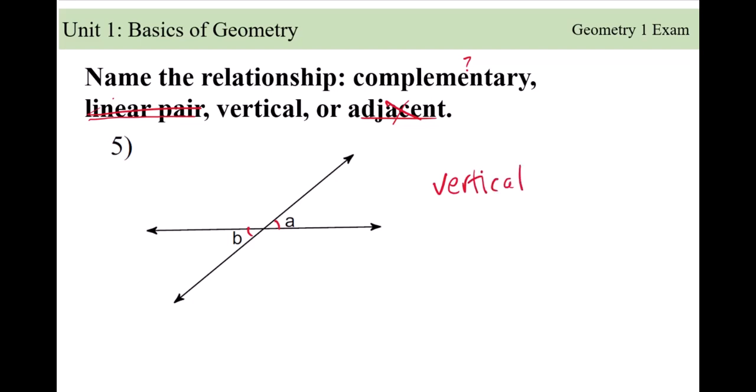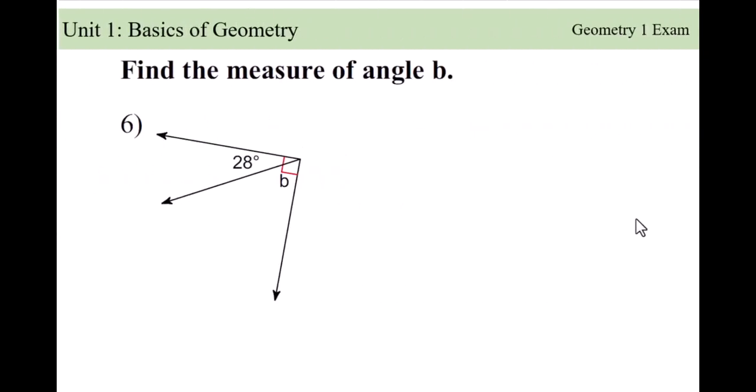Whenever you see an X shape or a bow-tie situation, those are vertical angles. For the next one, find the measure of angle B — the little square means 90 degrees. If this is 28 degrees, these two are complementary and add up to 90 degrees, so subtract 28 from 90 degrees. That's your answer.